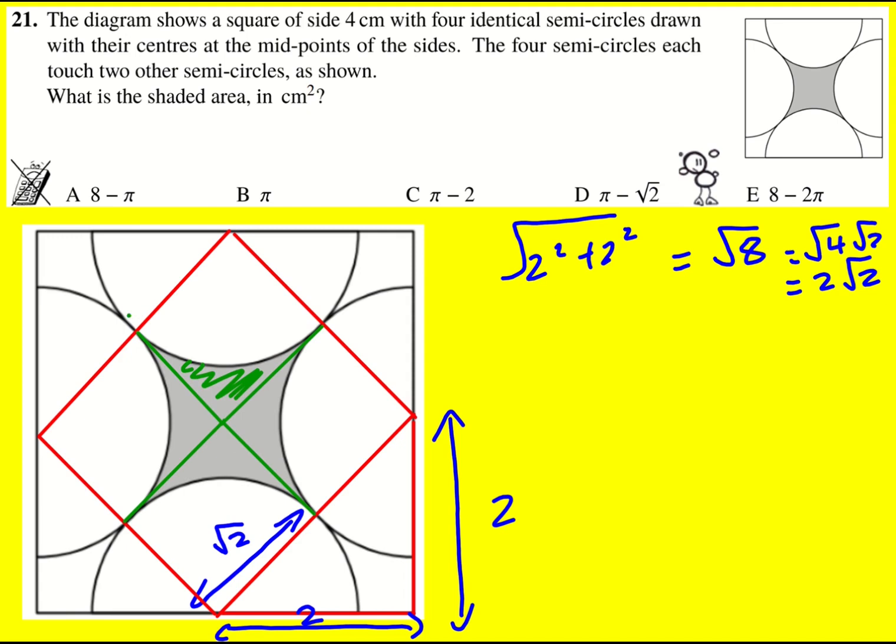And actually we can find that area, because we've got a square, a smaller square now, and it's the radius of the circle. So it's root two times root two. So the area of the square is going to be two.